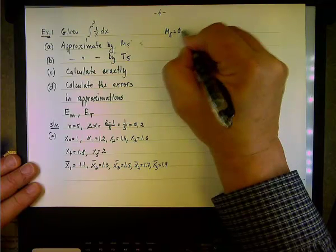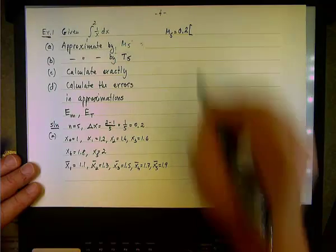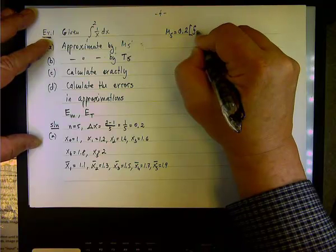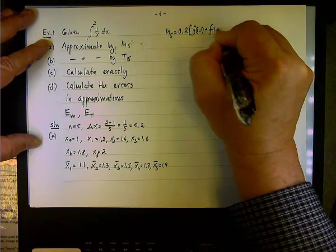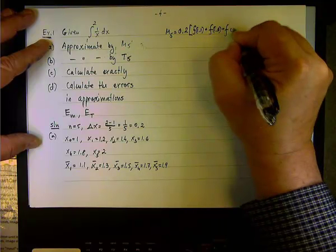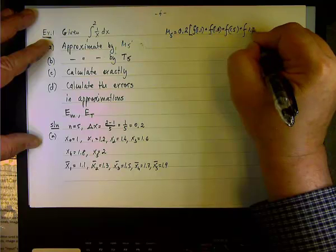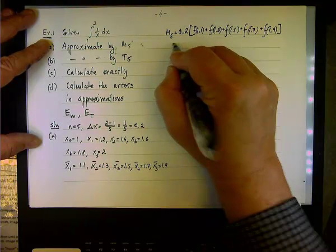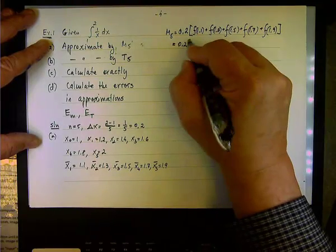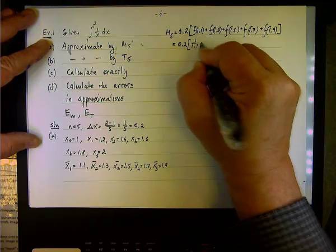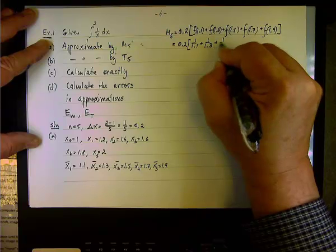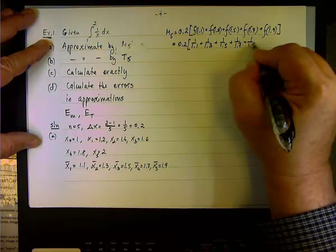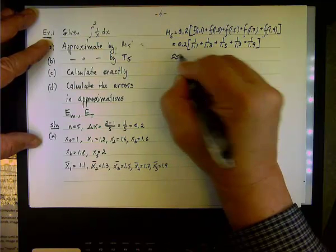Delta x is 0.2, and we have f of all of those. So f of 1.1, f of 1.3, f of 1.5, and so on. Specifically, the function is 1 over, so it will be 1 over 1.1, 1 over 1.3, and so on. Plug it in your calculator.